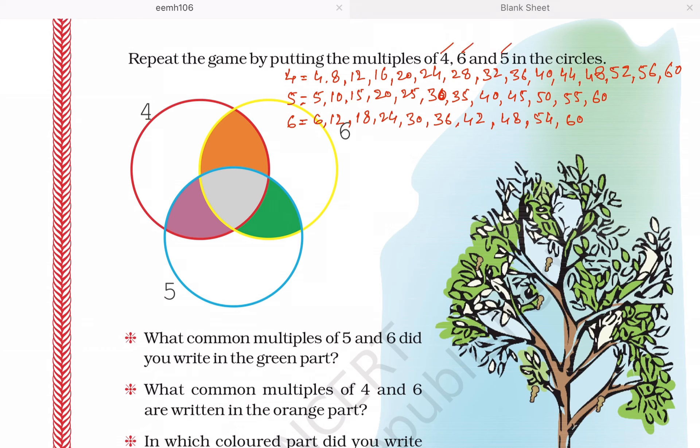Now you can see here I am writing the multiples of 4, 5, and 6. The multiples of 4 are 4, 8, 12, 16, 20, 24,